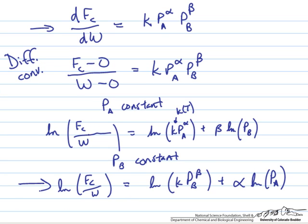So for those first three data points where B is constant, we can plot log of Fc, and W of course is a constant, so we can lump it in with these constants if we want. We can plot the log of Fc versus the log of Pa, and the slope of that should be alpha.